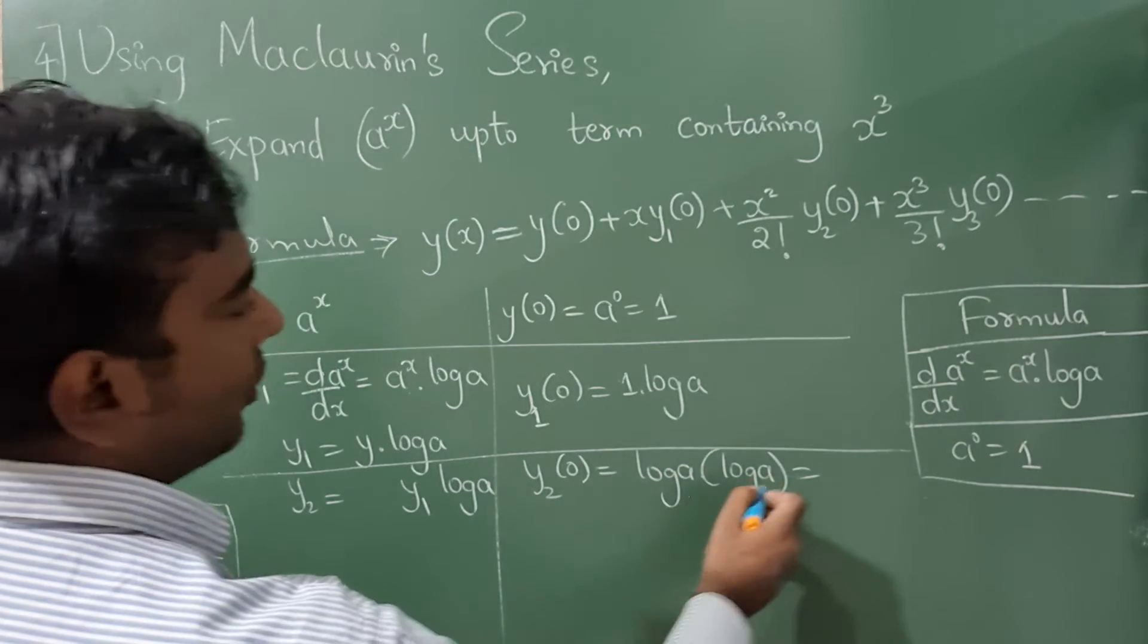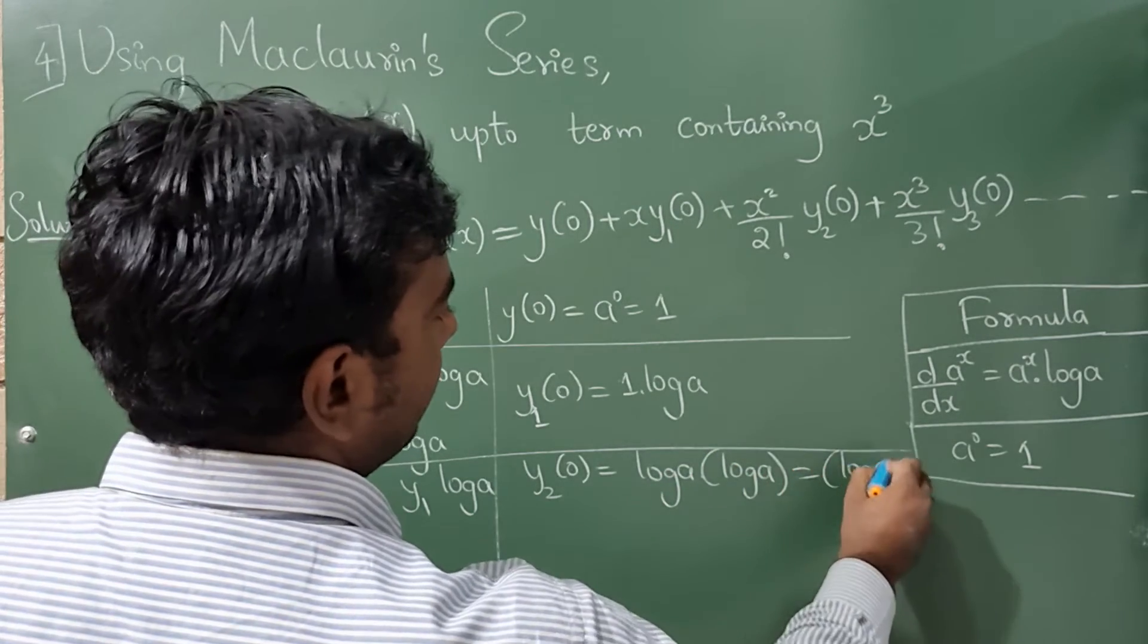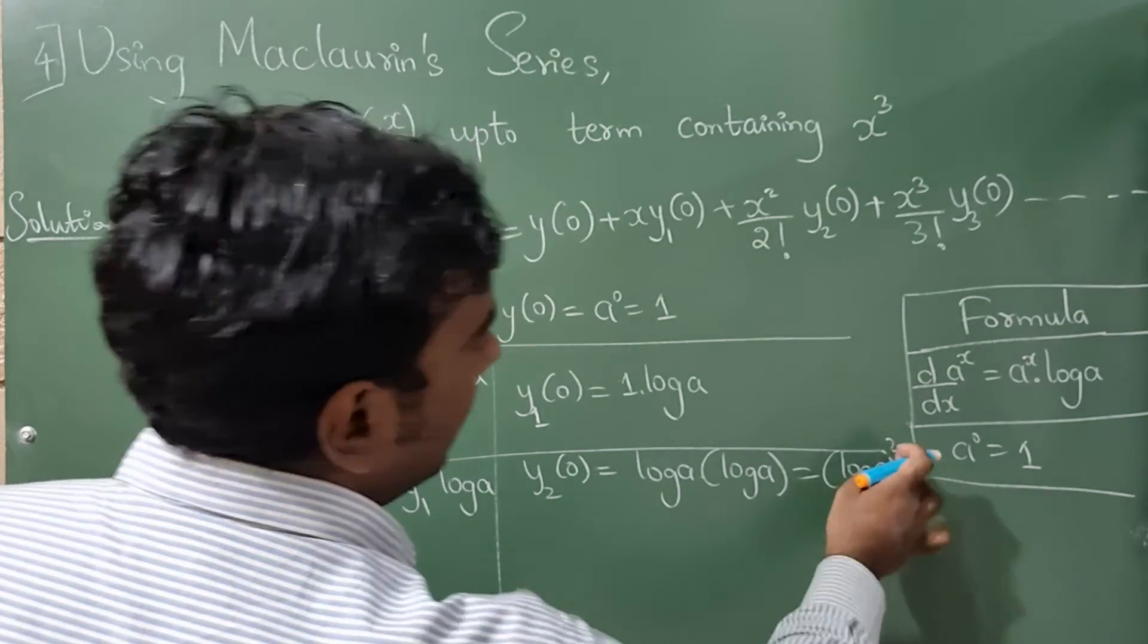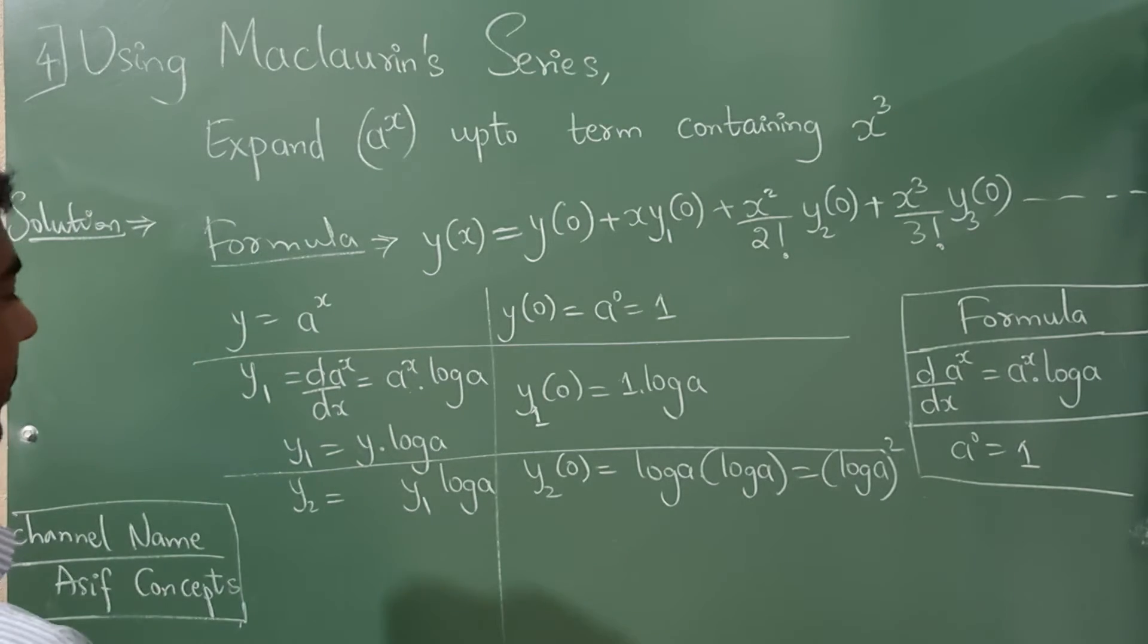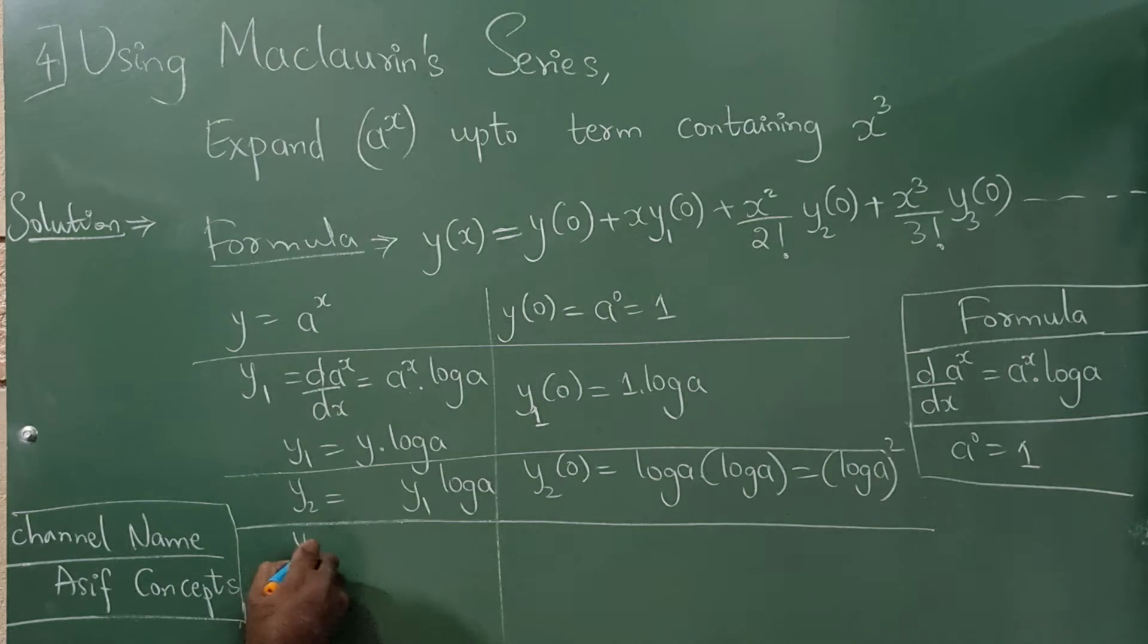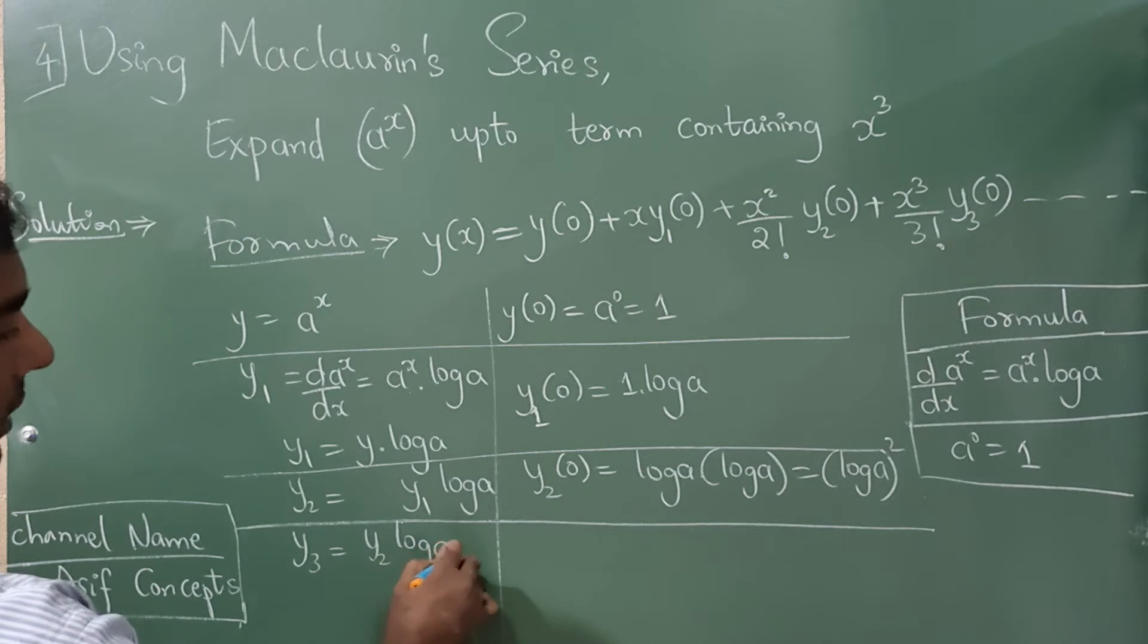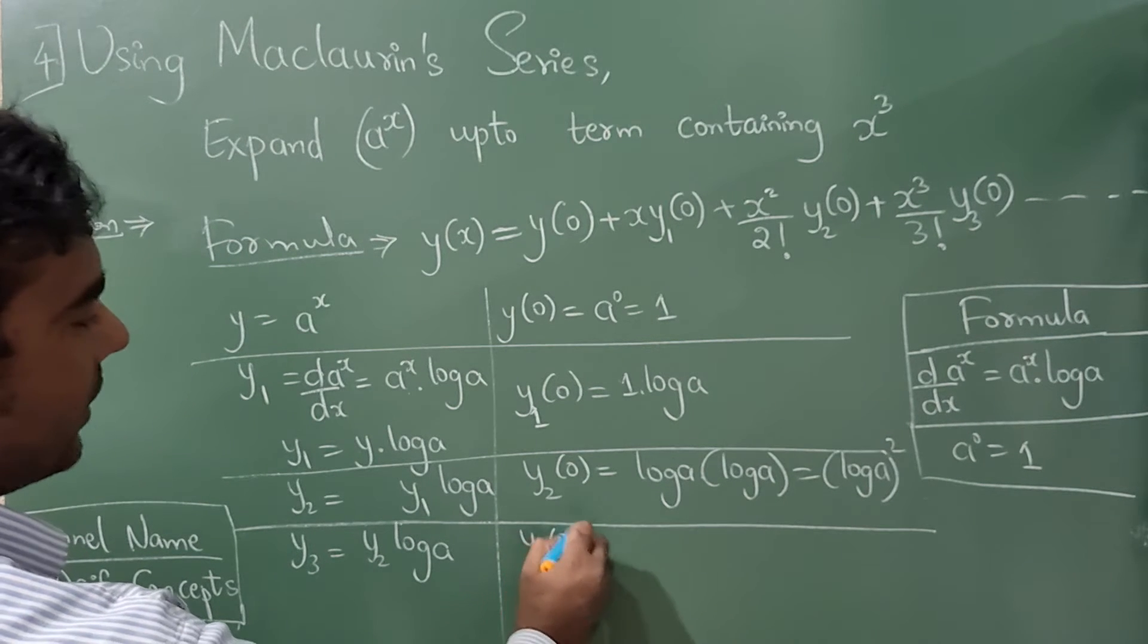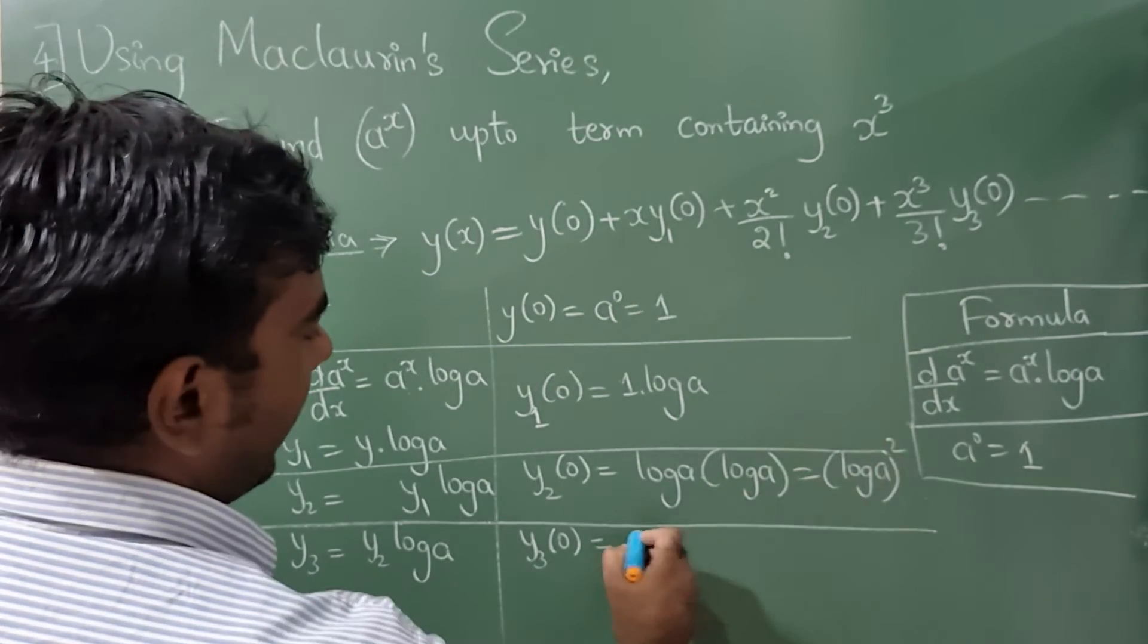So log a into log a is log a square. It is log a square. Now next, if you differentiate this y₁ you will get y₂, right? Log a. Now y₃(a₀), what is y₂? It is log a square.